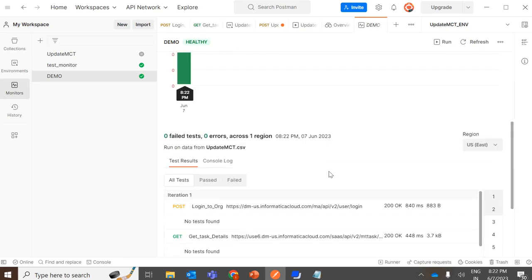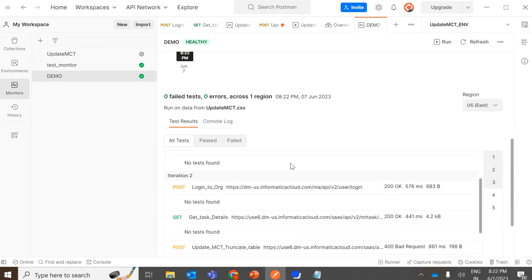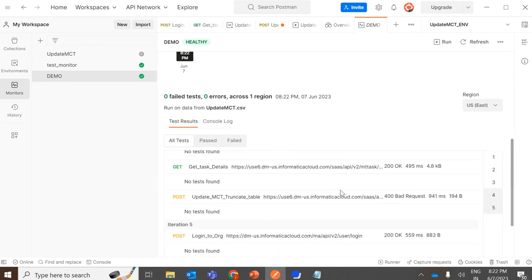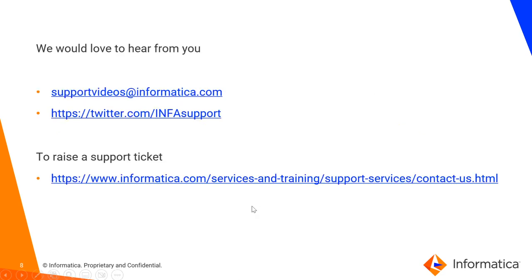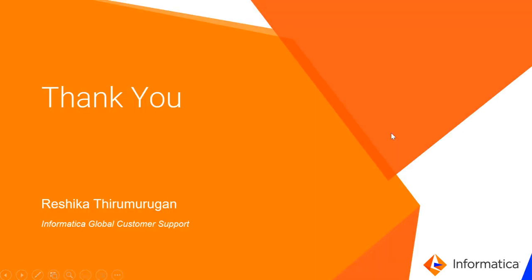This will show you all the stats once it's run, so you can check all the stats here. This is the link to the documentation where you can check the REST API URLs, and this is a KB article for automating API calls using Postman with step-by-step instructions and screenshots — you can find this link in the description of the video. We would love to hear from you via support.videos@informatica.com or twitter.com/infosupport. If you face any technical issues, please feel free to raise a support case at informatica.com. Thank you so much. Have a good day.